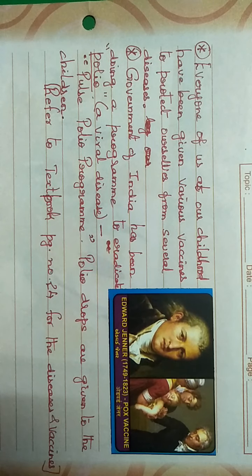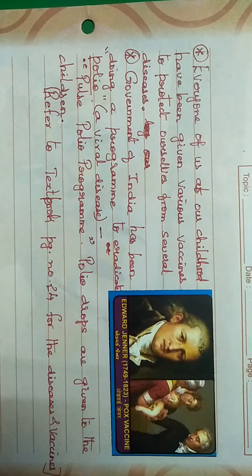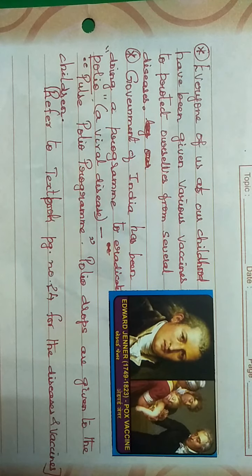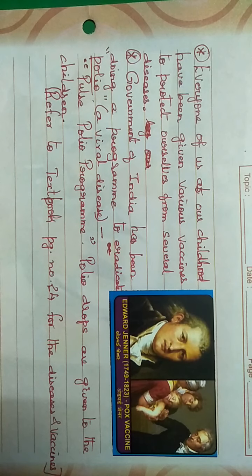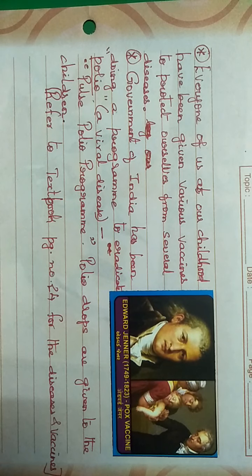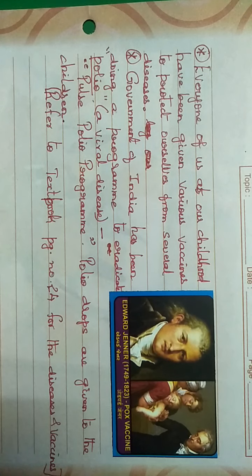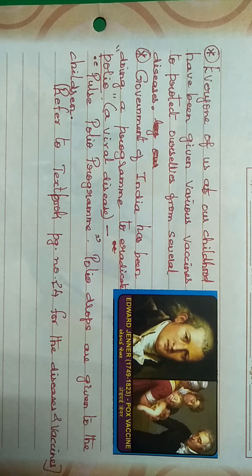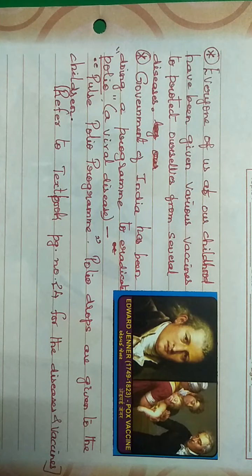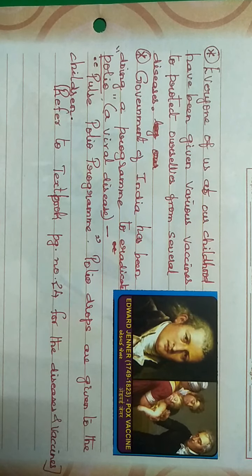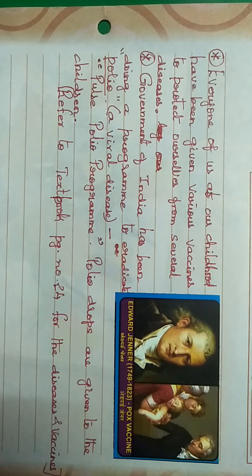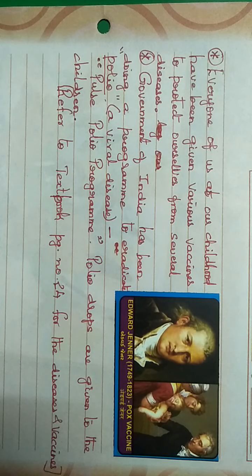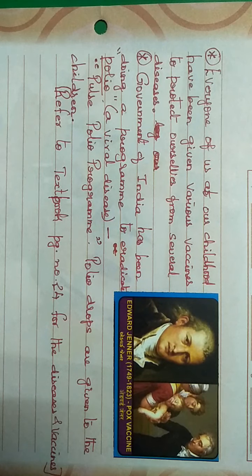All of us are given vaccines since childhood by our parents, from the day we are born until now, to protect ourselves from various diseases. You would have seen advertisements and mass promotion campaigns about polio drops — all children below the age of five are given polio drops because the Government of India wants to eradicate polio from the country. These polio drops are nothing but inactivated polio organisms given to the body so that the child is protected forever.